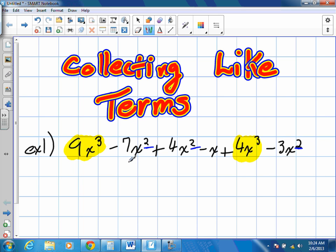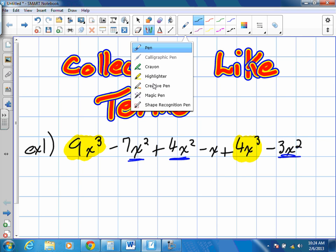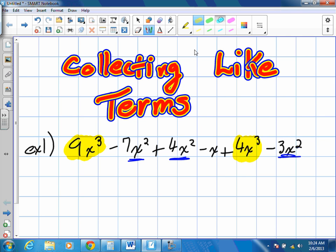In that same case, we're going to look at x squared. We have three terms that fall under being like terms. So we have negative, and always keep that sign in front of it. Think of that value being negative 7x squared plus 4x squared, and then minus 3x squared, or negative x squared.